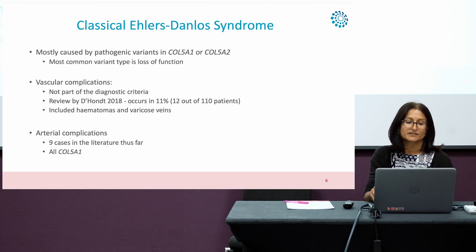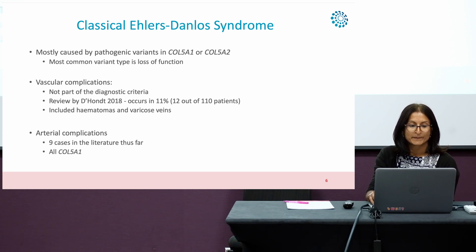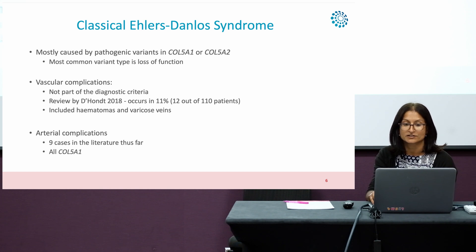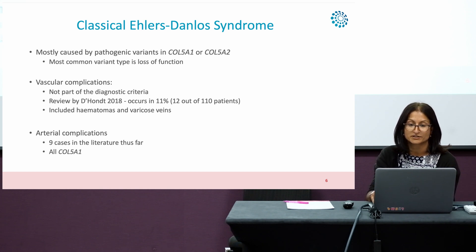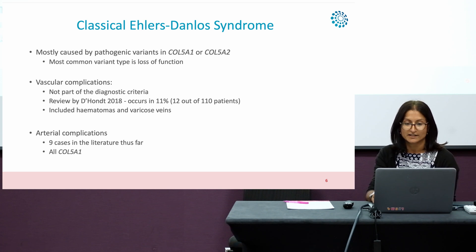Classical Ehlers-Danlos Syndrome is caused by pathogenic variants in either Col5A1 or Col5A2. The most common variant type is actually loss of function — very different to the typical glycine substitutions that are the majority of cases of vascular EDS that we've already heard described.